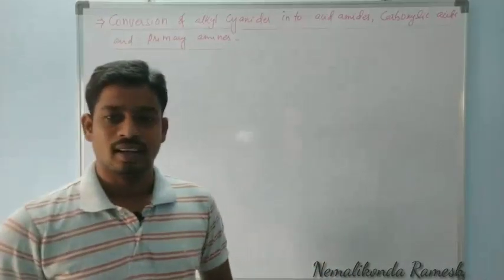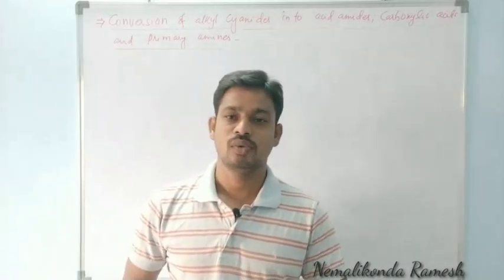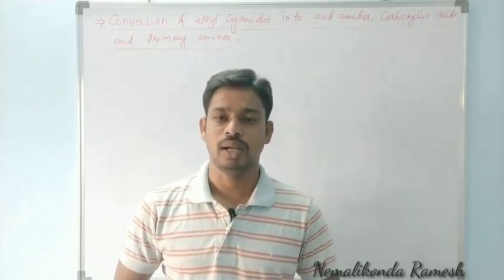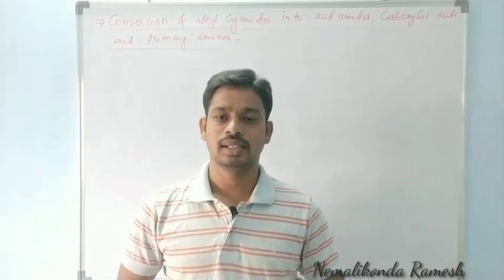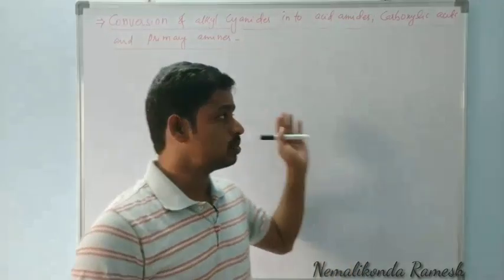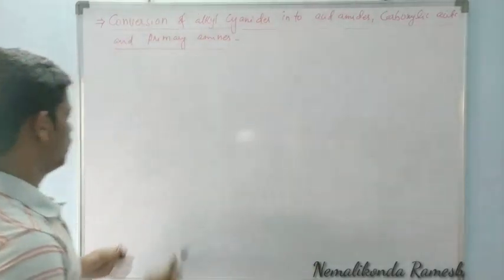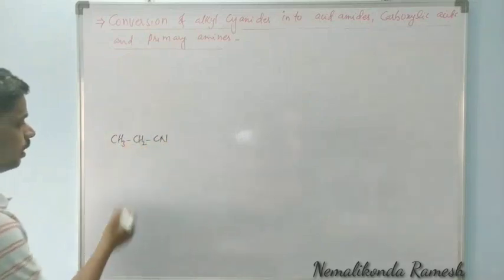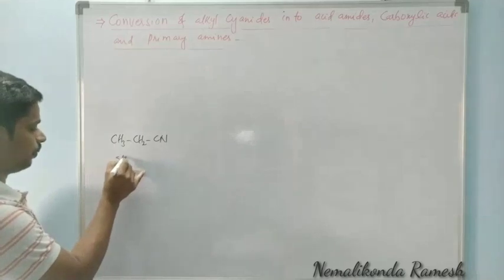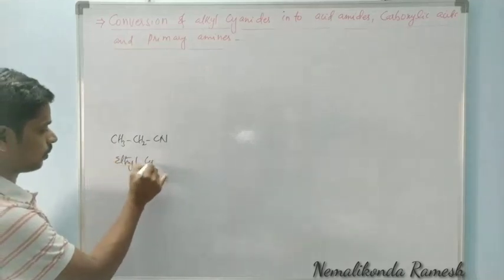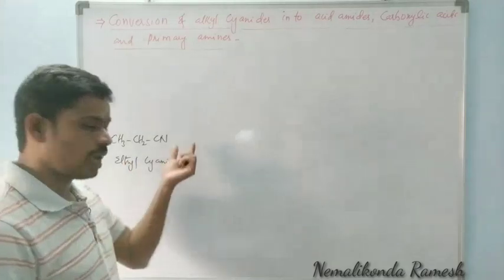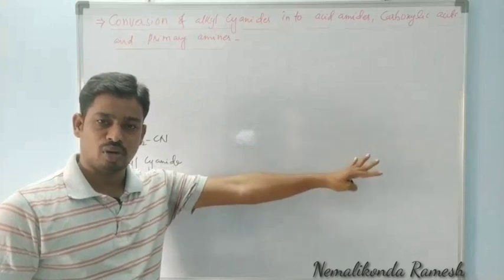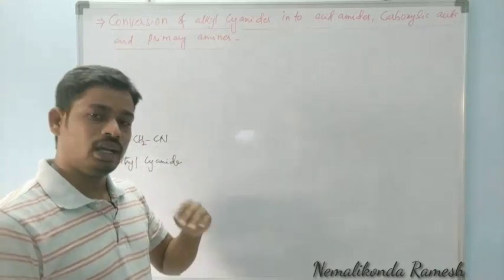Today we'll discuss conversion of alkyl cyanides into acid amides, carboxylic acids, and primary amines. Taking CH₃CH₂CN — ethyl cyanide — as an example, it can be converted to three types of products: acid amide, carboxylic acid, and primary amines. In different conditions, we'll get different products.